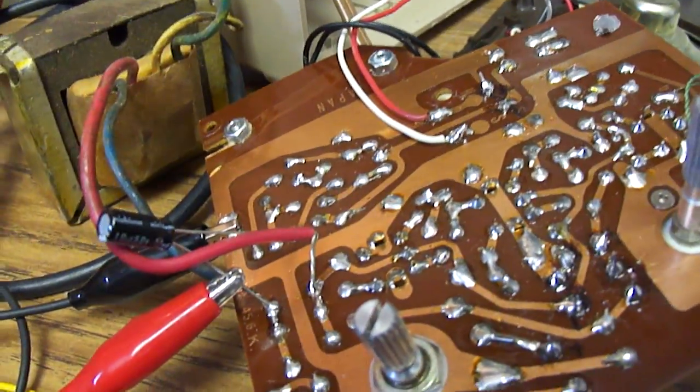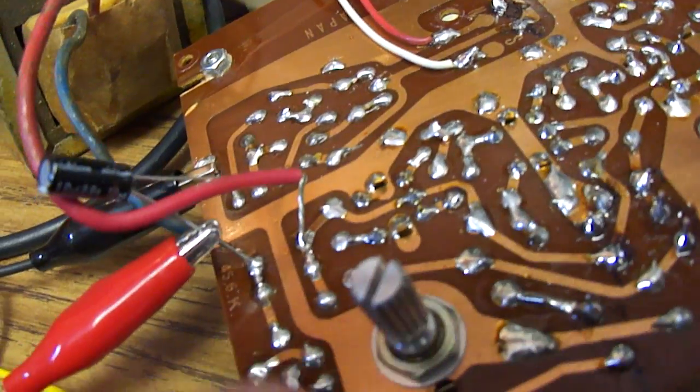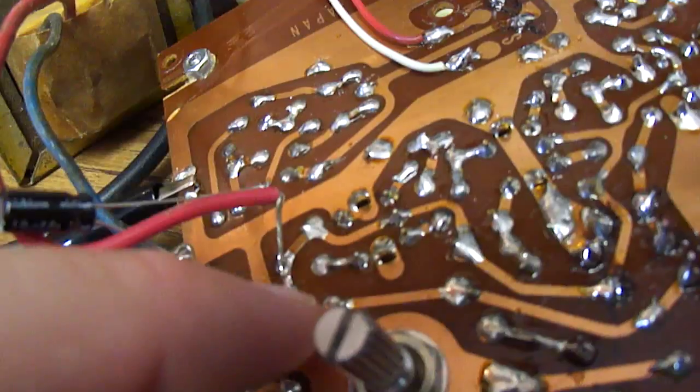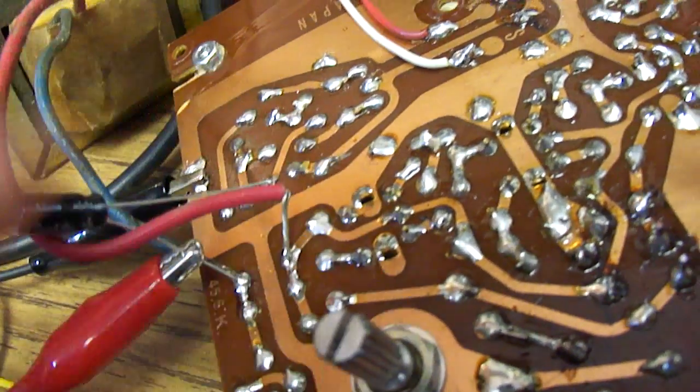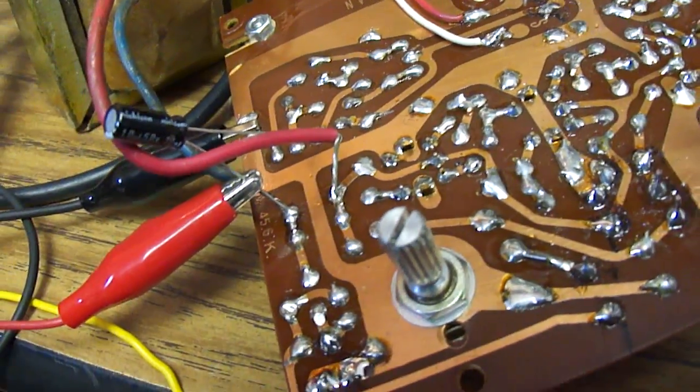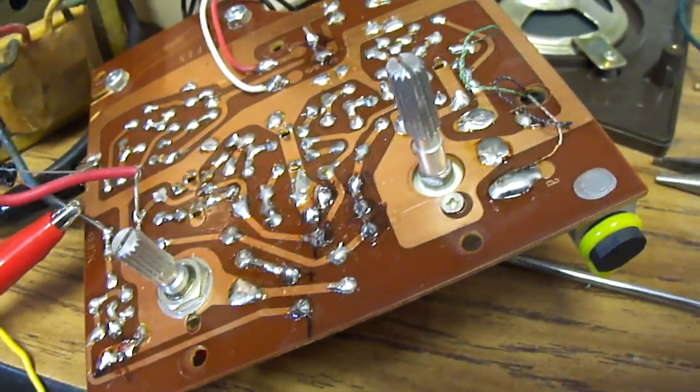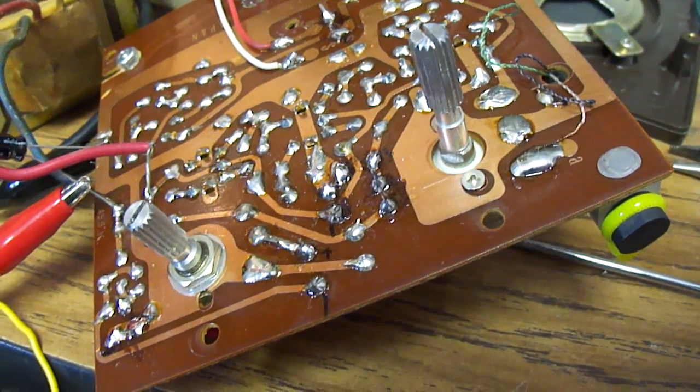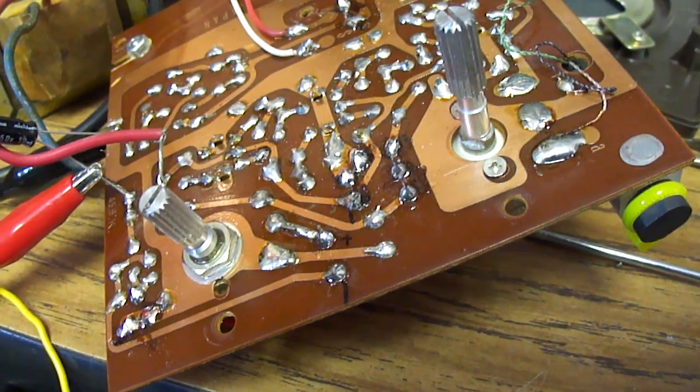And when I took a capacitor and put it from the volume control circuit over to the output circuit, I was able to get a little bit of sound. And that's after I figured out that the RF and oscillator portions were working and the IF stages were working okay.